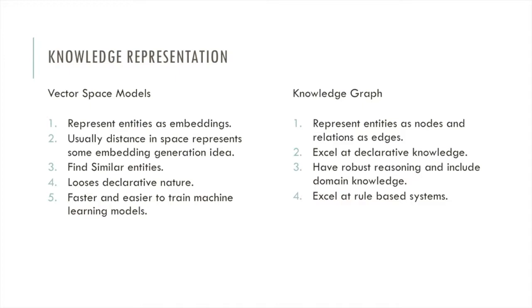Knowledge representation is one of the central challenges in the field of artificial intelligence. While representing knowledge through different methods, there is an inherent information tradeoff. For example, by representing knowledge just as vector embeddings, we lose the declarative character of information.